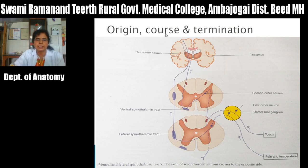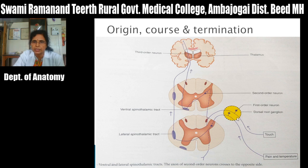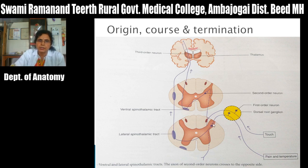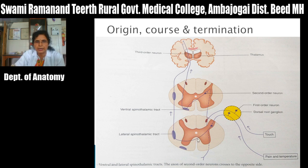Origin, course, and termination: peripheral processes of dorsal root ganglia neurons carry sensations from peripheral receptors — free nerve endings for pain, Krause's end bulbs for cold temperature, and Ruffini's endings for hot temperature. Central processes carry these sensations through the dorsal root into the dorsal gray column, where they relay mainly in laminae 2 to 6. Fibers arising from the dorsal horn neurons cross to the opposite side ventral to the central canal, go to the contralateral lateral funiculus, and ascend as the lateral spinothalamic tract.